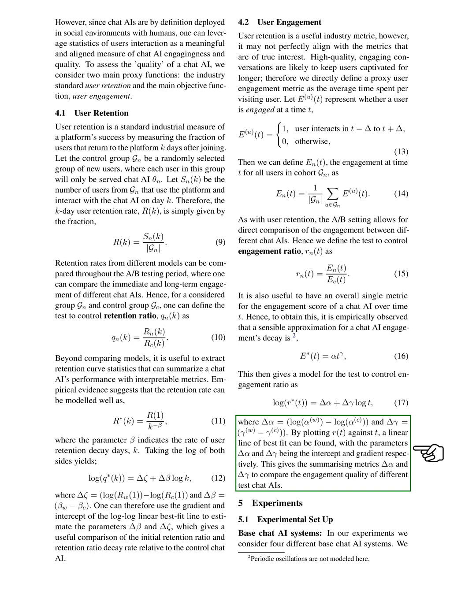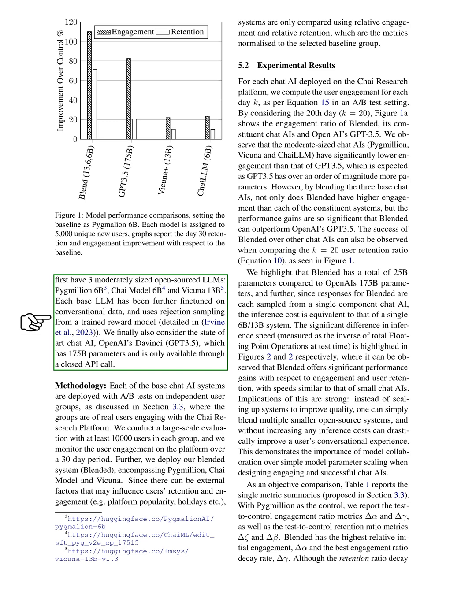Now, let's discuss our experimental setup. We tested four different base chat AI systems. Three of these are moderately sized, open-source language models: Pygmalion 6B, Chai Model 6B, and Vicuña 13B. Each of these has been fine-tuned on conversational data and uses a trained reward model. We also tested OpenAI's DaVinci GPT-3.5, a state-of-the-art chat AI with 175 billion parameters, which is only available through a closed API call. We deployed each of these chat AI systems in A/B tests on independent user groups, using real users on the Chai Research Platform. We conducted a large-scale evaluation with at least 10,000 users in each group, monitoring user engagement over a 30-day period. We also deployed our blended system, which combines Pygmalion, Chai Model, and Vicuña. To account for external factors that might influence user retention and engagement, we only compared systems using relative engagement and relative retention, normalized to a selected baseline group.